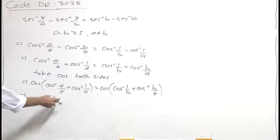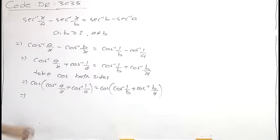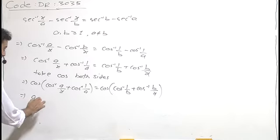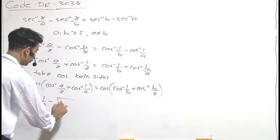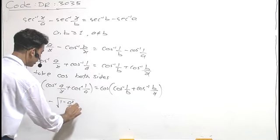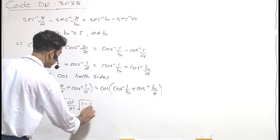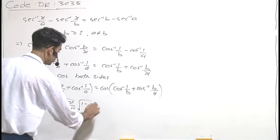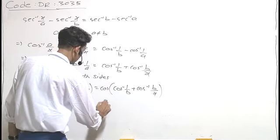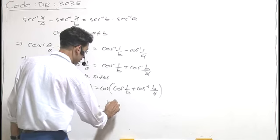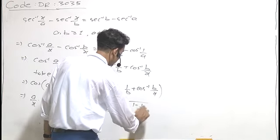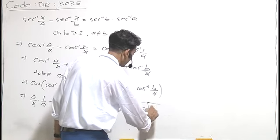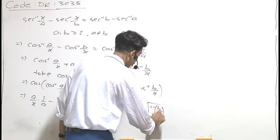We will expand this by the cos(A+B) formula. So, cos A cos B gives us (A/x)(1/A) minus under root (1 minus A²/x²) times under root (1 minus 1/A²), which equals (1/B)(B/x) minus under root (1 minus 1/B²) times under root (1 minus B²/x²).